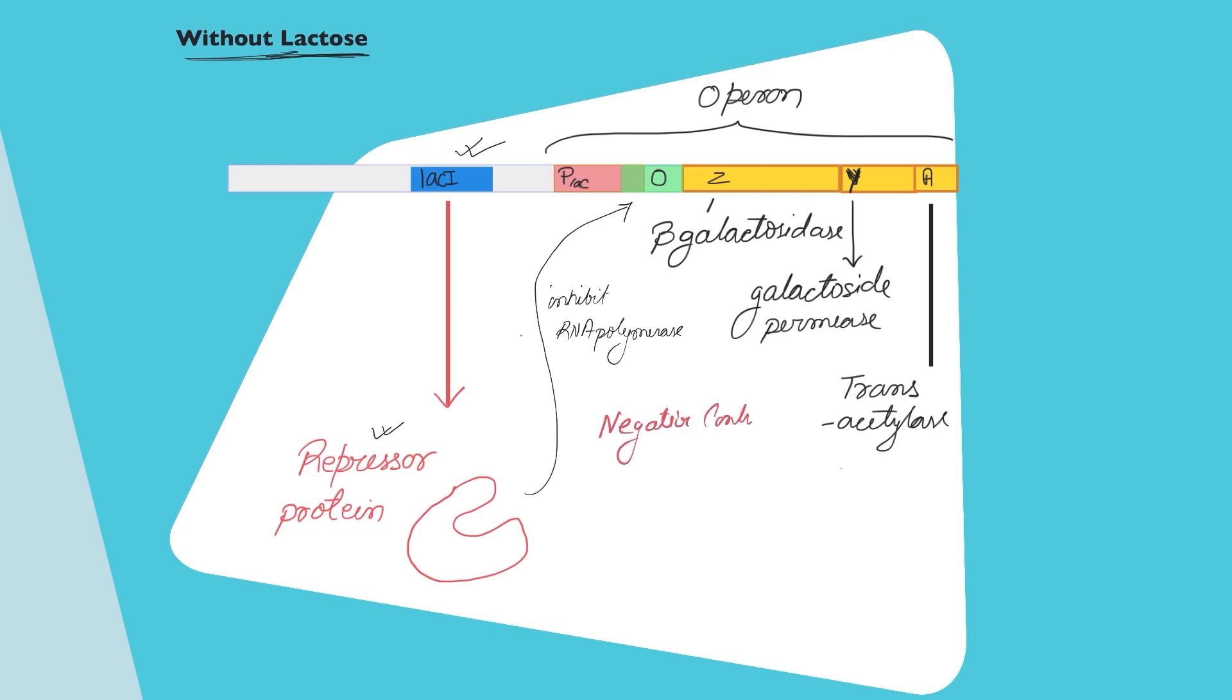Why do we say negative control? Because the repressor protein inhibits the progressing of RNA polymerase and inhibits the transcription. This is an example of negative control.